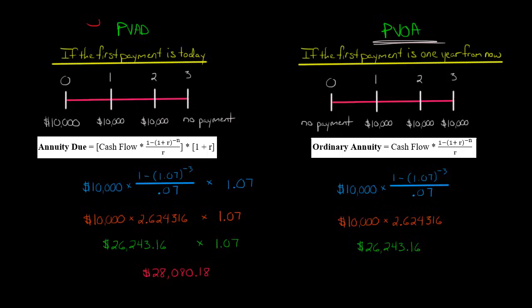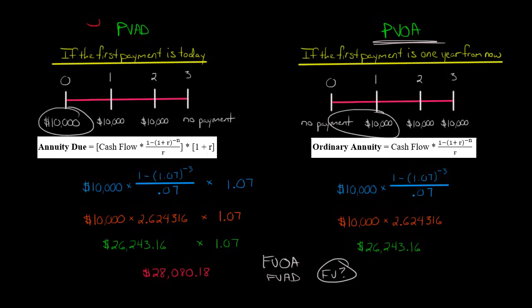Think about the flip side with future value. If you're making deposits and trying to figure out the future value, the future value of an annuity due will be worth more than that of an ordinary annuity, because making the first deposit today — rather than waiting a year — gives that money more time to grow.